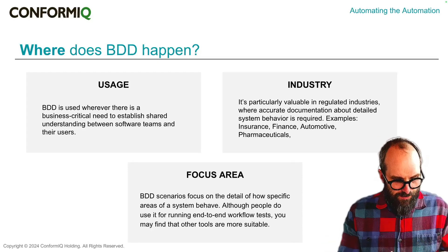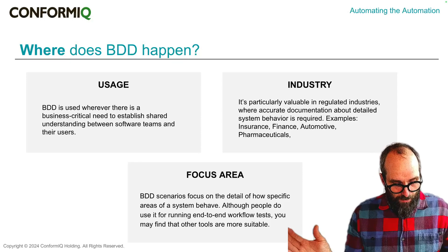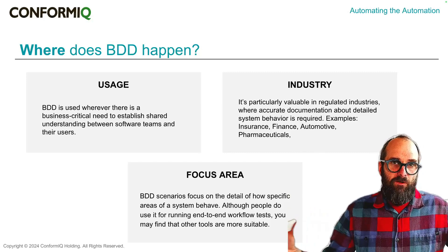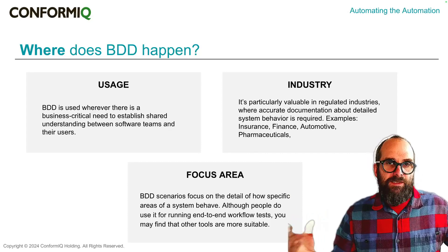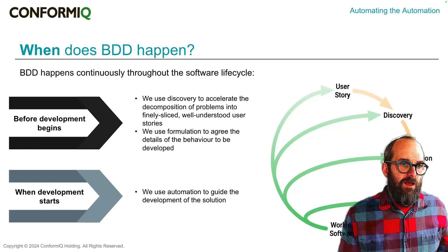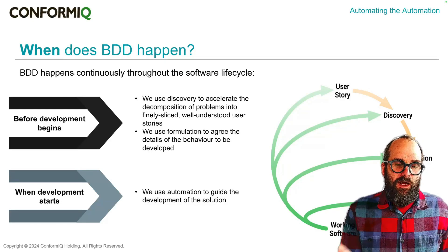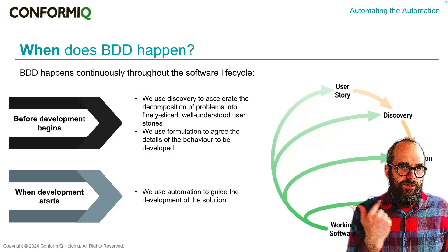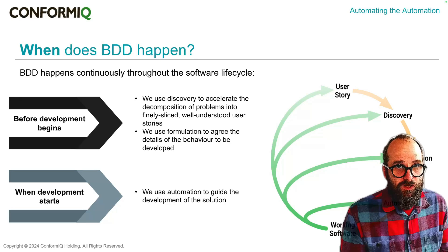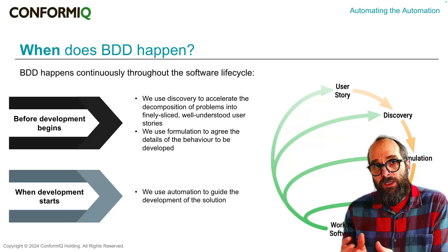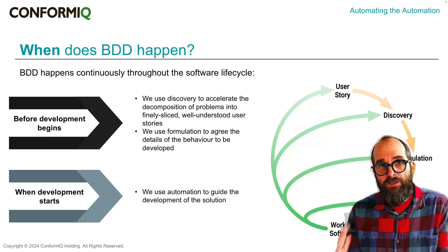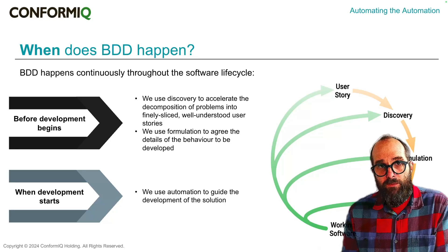We also tend to see BDD used at the individual scenario level — changes of state of the system — rather than big end-to-end tests. We see it used more in fine-grained scenario testing. In terms of where it fits into the software lifecycle, BDD is used before, during, and after code gets written for each user story. We start with what we call discovery, where we proactively look to understand the scope of the story in terms of examples. Then, once we understand those examples, we use formulation to express them in a way that can be understood not just by people but also by the computer — a tool like Cucumber — so you can automate the scenarios as tests. Then we automate them and use them to drive out the solution.